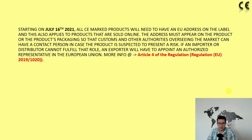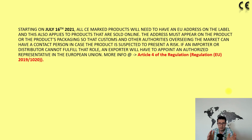Starting on July 16, 2021, all CE-marked products will need to have an EU address on the label, and this also applies to products sold online. The address must appear on the product or the product's packaging so that customs officials and market oversight authorities have a contact person if the product is suspected to present a risk. If the importer or distributor cannot fulfill that role, an authorized representative in the EU must be appointed. For more information, see Article 4 of Regulation (EU) 1020/2019.